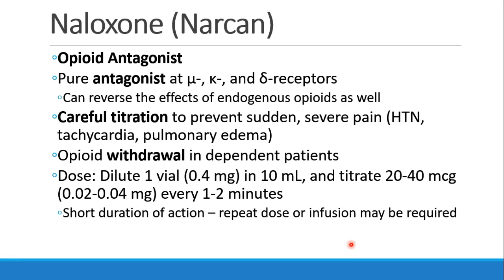Naloxone, also called Narcan, is an antagonist at the mu, kappa, and delta receptors. Not only does it antagonize exogenous opioids, it even reverses the effect of endogenous opioids. This drug should be given carefully to prevent sudden severe pain and other side effects like hypertension, tachycardia, and even pulmonary edema. It will precipitate opioid withdrawal in patients who are dependent on opioids. The way I usually give it is to take one vial — 0.4 milligrams — dilute it in 10 milliliters, and give 20 to 40 micrograms every one to two minutes, repeating until the clinical effect is achieved. Like flumazenil, this drug has a short duration of action, so we may need to repeat the dose or put the patient on a naloxone infusion until the original opioid has worn off.